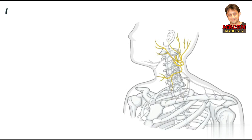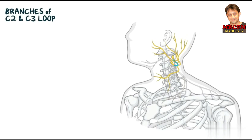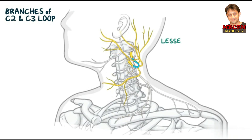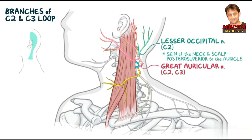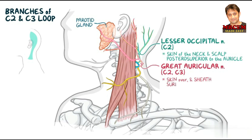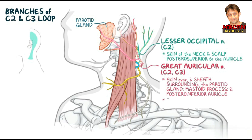There are three nerves branching from the C2 and C3 loop. The lesser occipital nerve, which contains fibers from C2, supplies the skin of the neck and scalp posterior superior to the auricle. The great auricular nerve contains fibers from both C2 and C3, and ascends across the SCM to the inferior pole of the parotid gland, where it divides to innervate the skin over and the sheath surrounding the parotid gland, the mastoid process, the posterior inferior part of the auricle, and an area of skin extending from the angle of the mandible to the mastoid process.